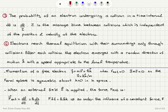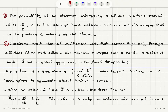Assumption three: the probability of an electron undergoing a collision in a time interval dT is dT divided by tau. If you wait longer, the probability of a collision increases. Tau is the mean free time — the average time between collisions — and it is independent of the position and velocity of the electrons. It is essentially the average time for a successive collision after an electron emerges from one collision.